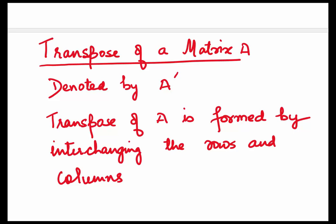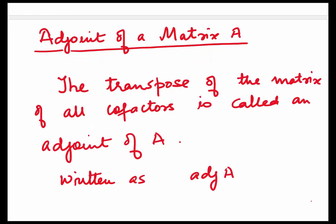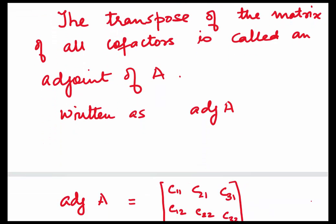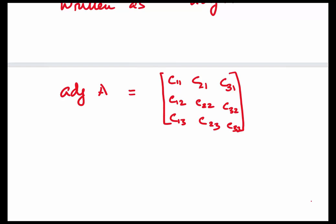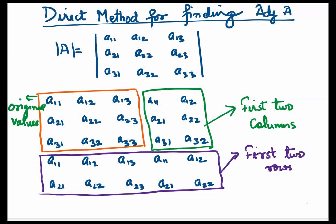Let's see what the transpose of a matrix A is. The transpose of a matrix A is denoted by A dash, and what we do is make the rows into columns and columns into rows. Now let's see what the adjoint of a matrix A is. If you take the transpose of the matrix of all the cofactors, it is called the adjoint of A, written in short as ADJ.